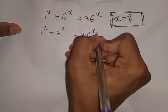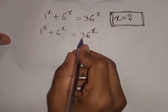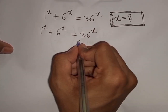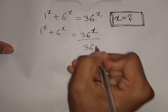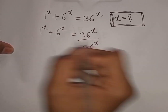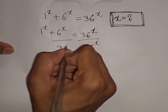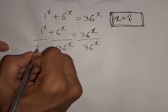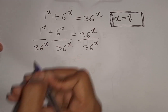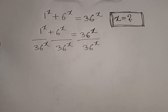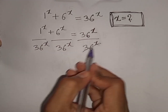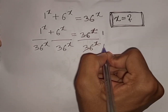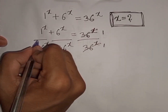Now, we divide both sides by 36^x. So, divided by 36^x on both sides, and this will be cancelled.